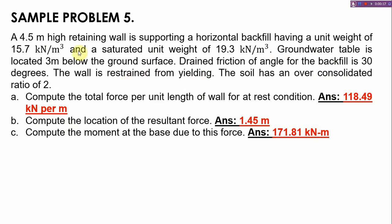Here is the problem: A 4.5 meters high retaining wall is supporting a horizontal backfill having a unit weight of 15.7 kilonewton per cubic meter and a saturated unit weight of 19.3 kilonewton per cubic meter. Groundwater table is located 3 meters below the ground surface and the drained friction angle for the backfill is 30 degrees. The wall is restrained from yielding. The soil has an over consolidated ratio of 2.